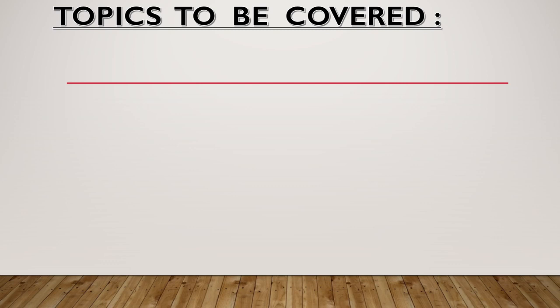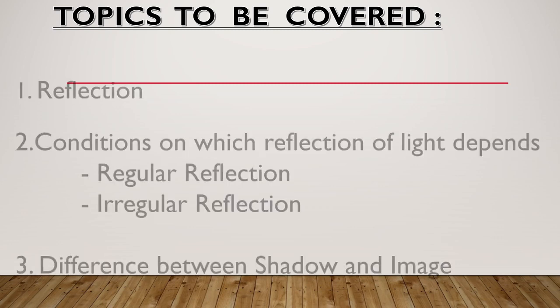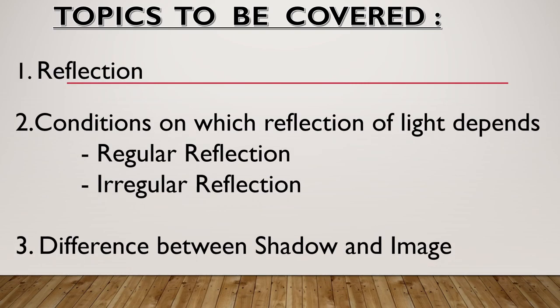In our previous video lectures, we have covered two topics: Light and Shadow. In this video lecture, we will be covering the topics under the heading Reflection. Starting with: No. 1 — What is Reflection? No. 2 — Conditions on which reflection of light depends. We have two categorizations of reflection: regular reflection and irregular reflection. We will also look at a few differences between shadow and image.